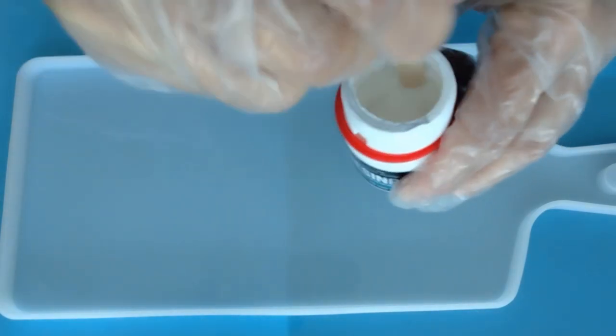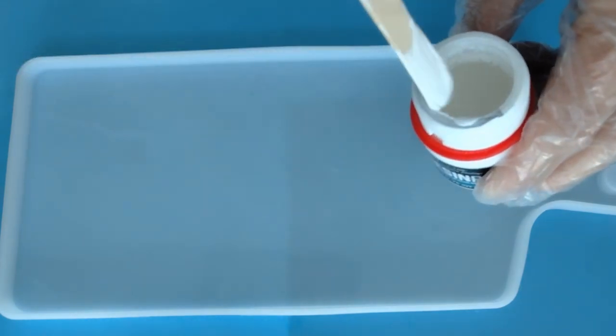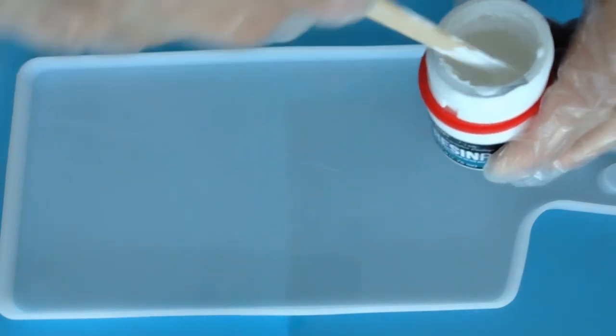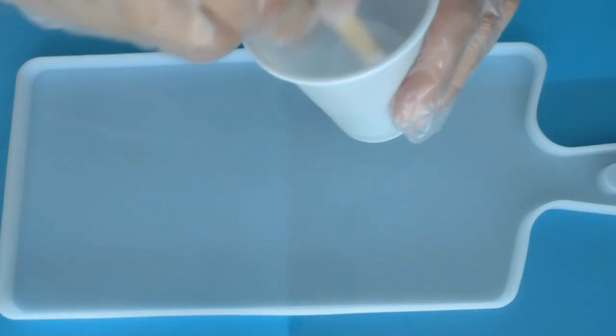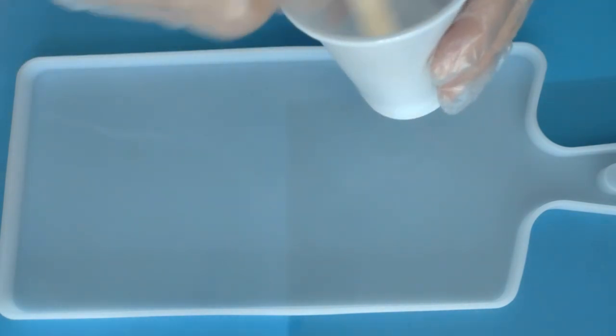For my waves, I will be using D-Pon epoxy pigment paste. So first I mix my white pigment paste very well before I add it into my resin.